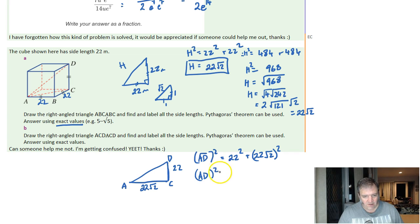AD squared, when I square it, is going to be 484 plus 484 times 2, which is 968. So AD squared is these two added together, 1452.